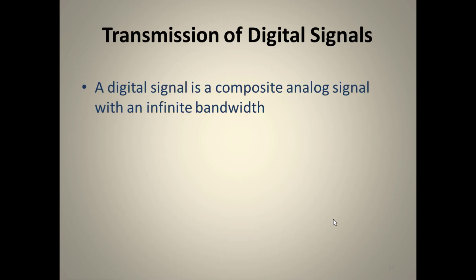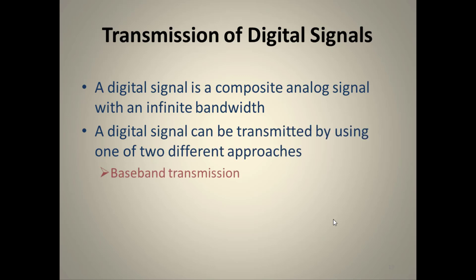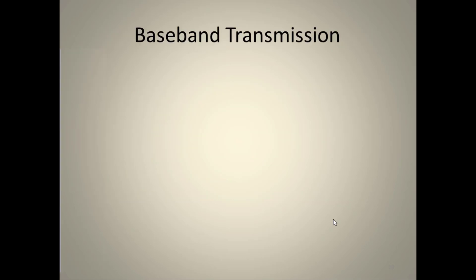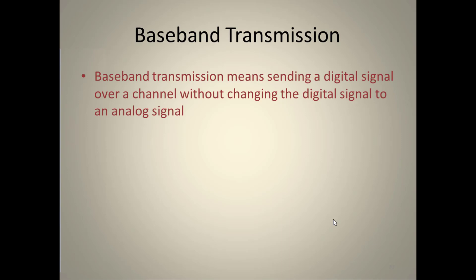To transmit digital signals, we can use two approaches: baseband transmission and broadband transmission. A digital signal is a composite analog signal requiring infinite bandwidth. In baseband transmission, we send the digital signal through the channel without any changes, in its original format.